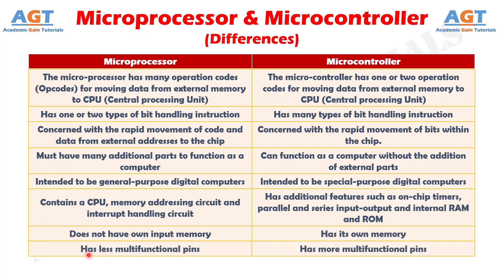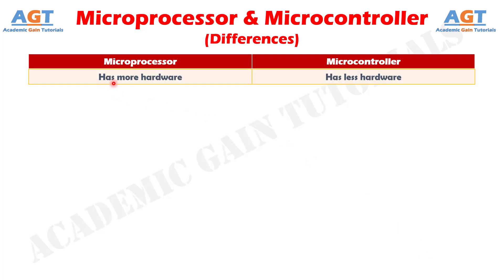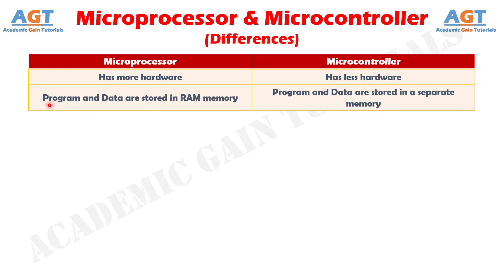Number 8: The microprocessor has less multi-functional pins, whereas the microcontroller has more multi-functional pins. Number 9: The microprocessor has more hardware, whereas the microcontroller has less hardware. And Number 10: In a microprocessor, program and data are stored in RAM memory, whereas in a microcontroller, program and data are stored in a separate memory.